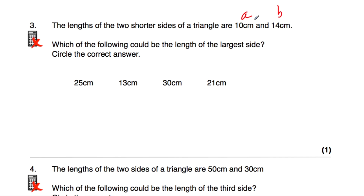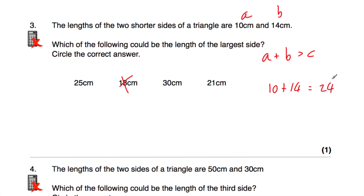13cm can't be the longest side because 14 is already one of the shorter sides. Now A plus B must be greater than C, so adding the two shorter sides: 10 plus 14 equals 24. The longest side cannot be longer than 24cm. So it can't be 25cm and it can't be 30cm. But it could be 21cm — you could draw a 21cm longest side with a 10cm and 14cm line meeting at the top. The answer is 21cm.